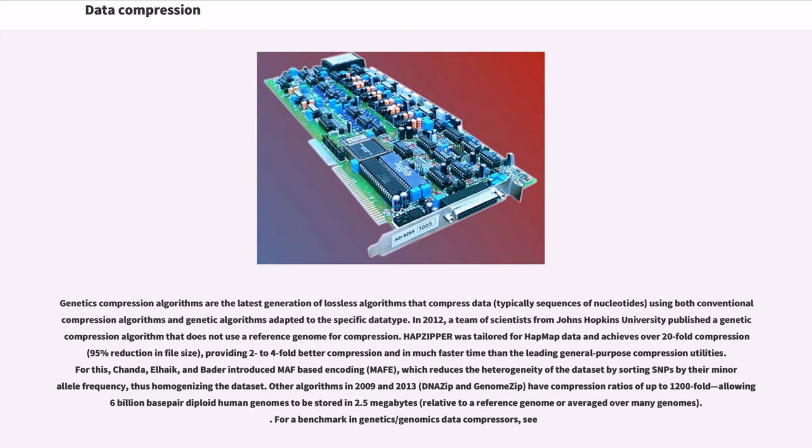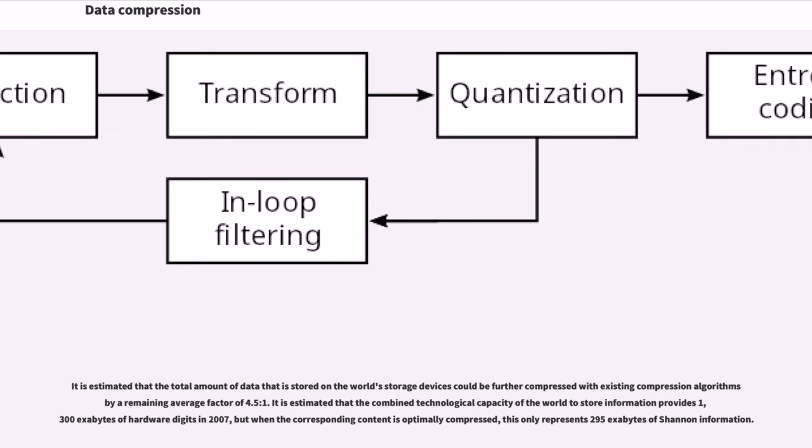For a benchmark in genetics/genomics data compressors, see. It is estimated that the total amount of data that is stored on the world's storage devices could be further compressed with existing compression algorithms by a remaining average factor of 4.5 to 1. It is estimated that the combined technological capacity of the world to store information provides 1,300 exabytes of hardware digits in 2007, but when the corresponding content is optimally compressed, this only represents 295 exabytes of Shannon information.